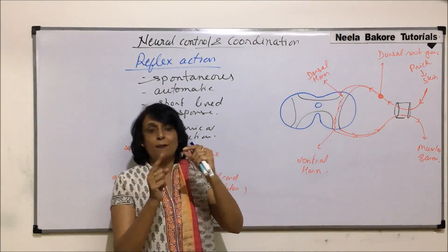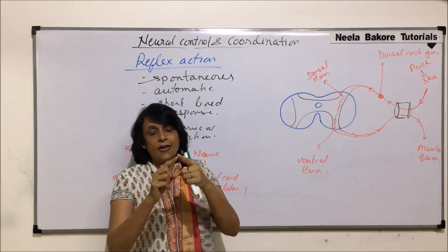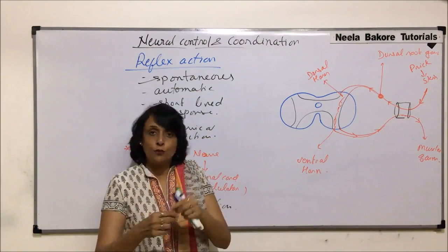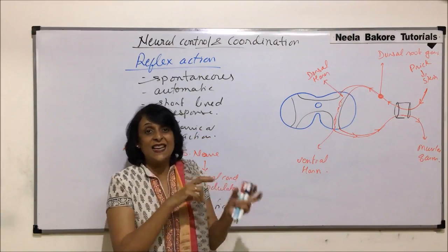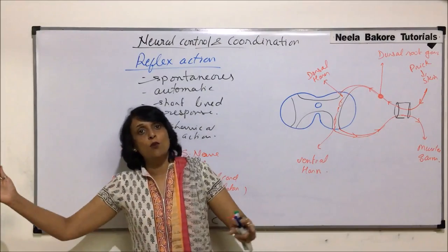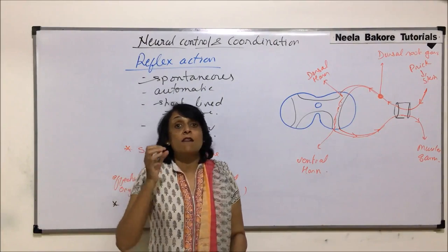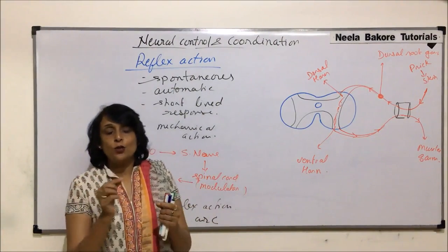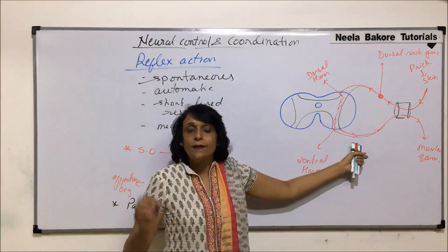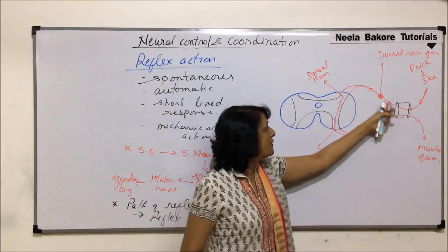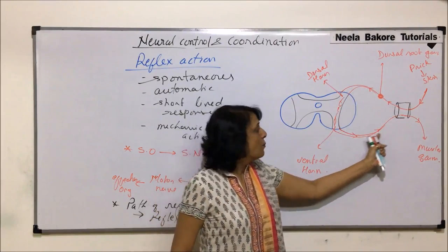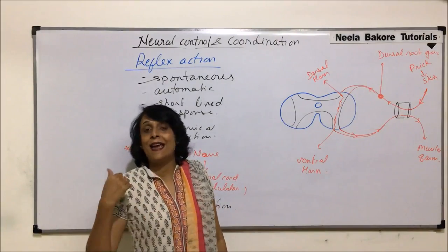So if somebody pricks us, the prick is the stimulus. The skin receives it, the message travels through the sensory nerve to the spinal cord, the spinal cord converts that sensory message into a motor impulse, and the motor nerve brings the message to the arm muscle to move away from that stimulus. This is a very quick response — as soon as we get pricked, the response is shown. In that short period, the sense organ received the stimulus, the sensory nerve took it to the spinal cord, the spinal cord modulated it, and the motor nerve delivered it to the muscle.